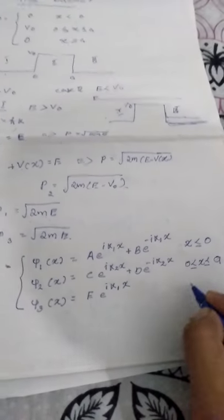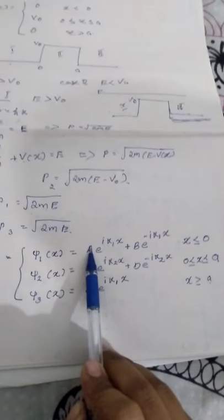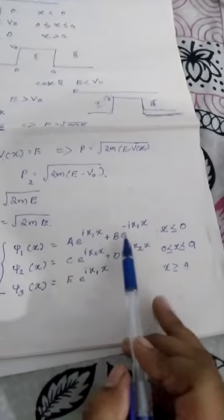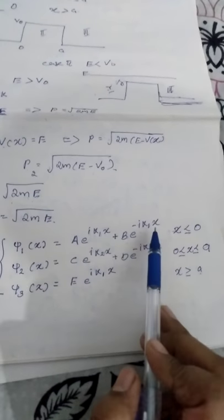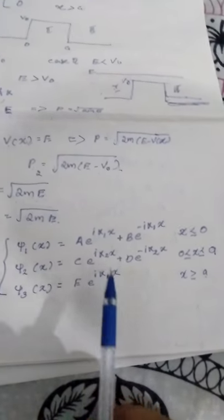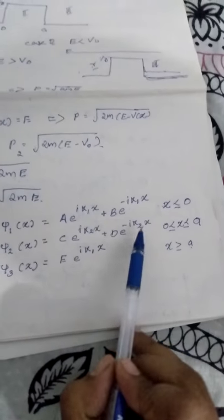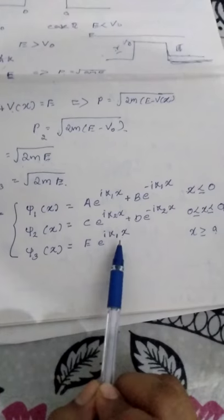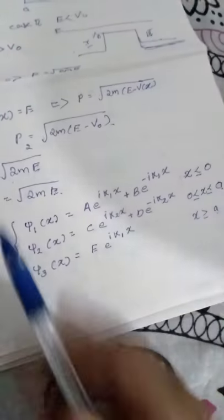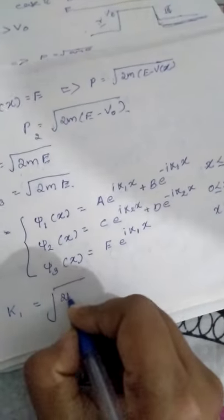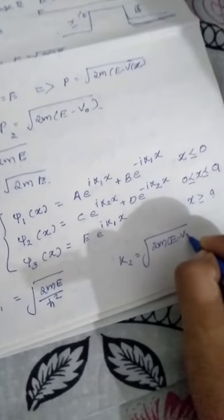In region 1, A·e^(iK1x) is the incident particle wave, B·e^(-iK1x) is the reflected wave. In region 2, C·e^(iK2x) is the transmitted wave into the barrier and D·e^(-iK2x) is the reflected wave at the boundary. E·e^(iK1x) in region 3 is the transmitted wave. K1 equals root of 2mE over h-bar squared, and K2 equals root of 2m(E minus V0) over h-bar squared. Now let's apply boundary conditions.